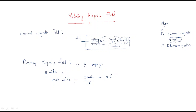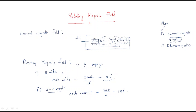Each coil has a phase displacement of 120 degrees. We also require three currents, and each current has a phase displacement of 120 degrees — again 360 divided by 3. So we require three coils each displaced by 120 degrees, and three currents. When using three-phase supply, it automatically provides three currents with 120 degrees of phase displacement.